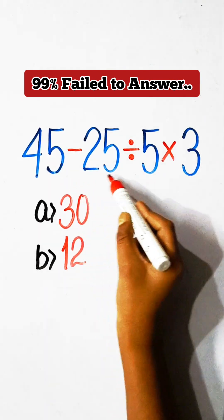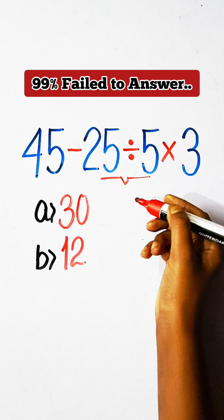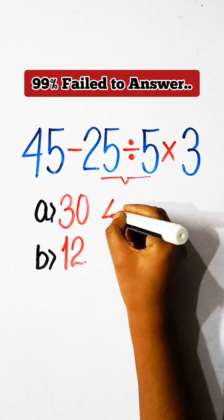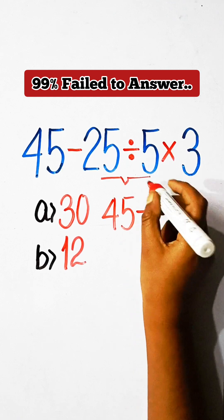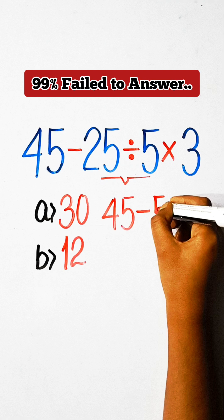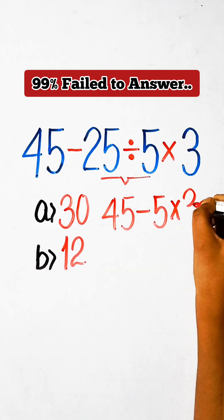So let's solve this. First of all we have to divide, so we can write here 45 minus, 25 divided by 5 is 5, multiplied by 3.